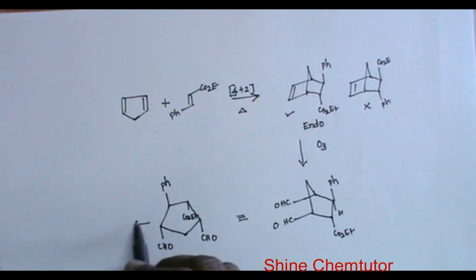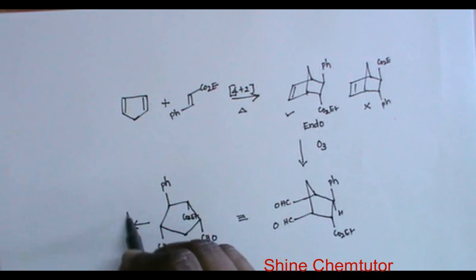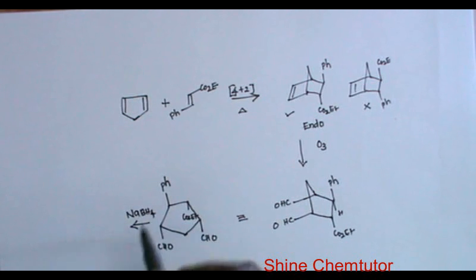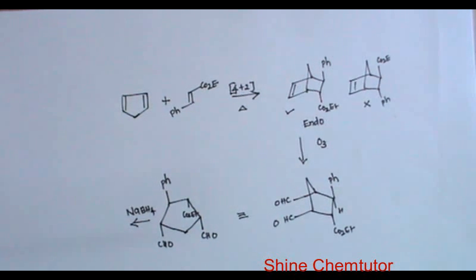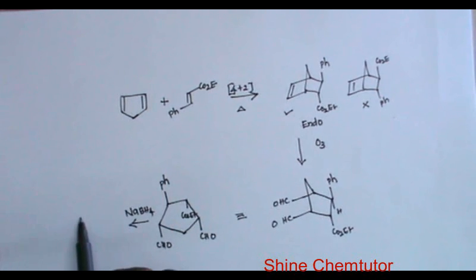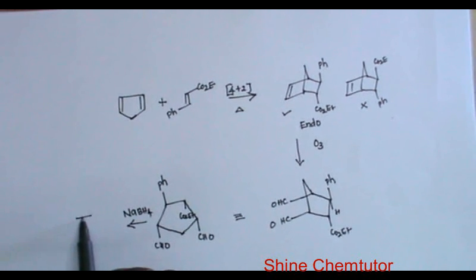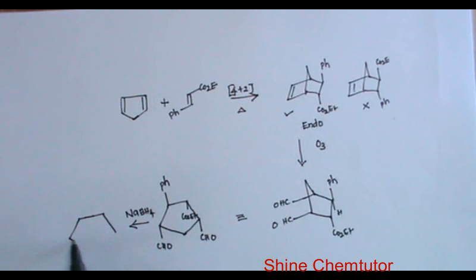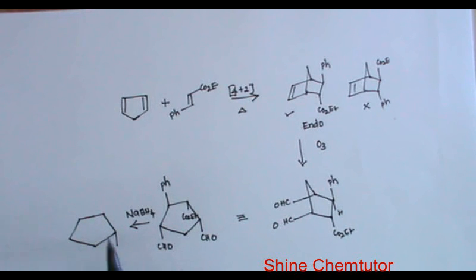When I reduce this with sodium borohydride — sodium borohydride can reduce only aldehyde — this aldehyde as well as this one will get reduced to give the corresponding alcohol.